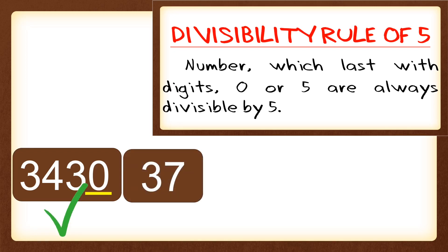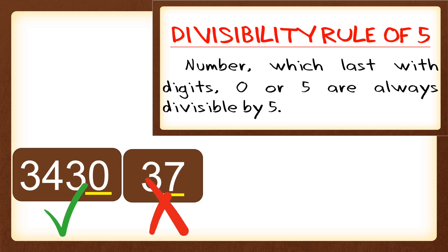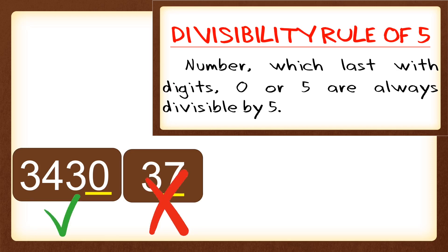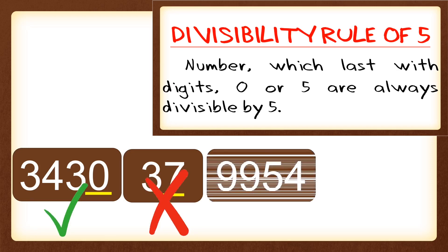Next, 37. The number 37 has a last digit of 7, so it is not divisible by 5 because it does not end in either 0 or 5.